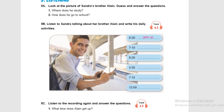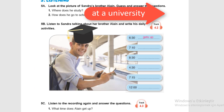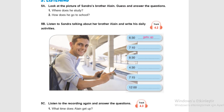So the first question: where does he study? Look at him — he doesn't go to primary school because he is older. I think he is a student at a university. Maybe you should try to think about the answer of the next question.